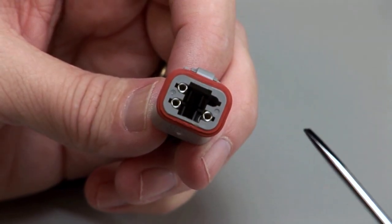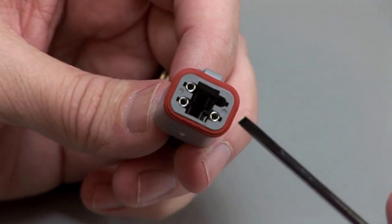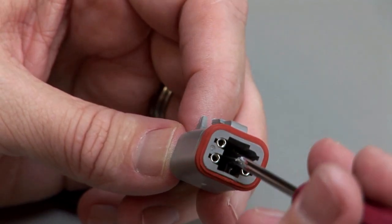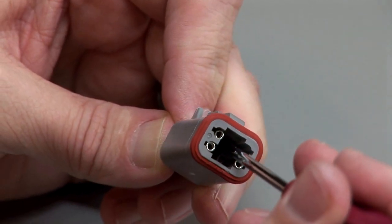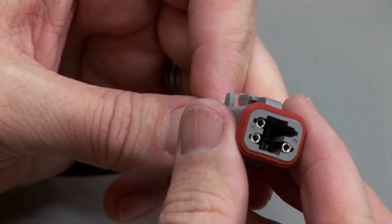To remove the contacts, release the locking finger by moving it away from the shoulder of the contact, while at the same time gently pulling the wire through the rear grommet.